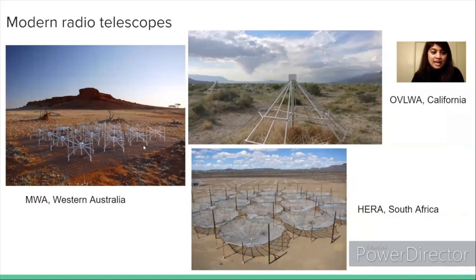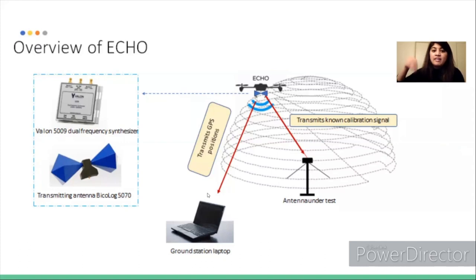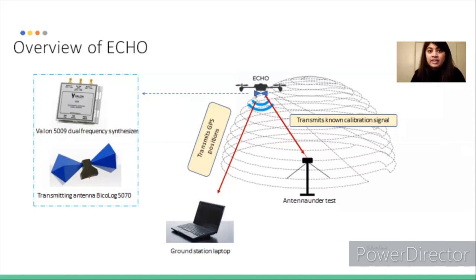We explore the use of drones to calibrate these telescopes — specifically to study the response of each antenna. ECHO stands for External Calibration of Hydrogen Observatories. The system consists of a drone carrying a known calibration signal, which is flown around the antenna under test. It transmits a known signal along with its GPS location, and at every position we record the antenna's response — that's how we study and calibrate the instrument.